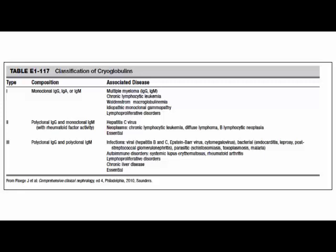Si la clona es un mastocito, definitivamente vamos a tener mieloma o macroglobulinemia de Waldenström. La leucemia linfocítica crónica, las gamapatías monoclonales que muchas veces no llegan a definir un mieloma múltiple, los desórdenes linfoproliferativos mal definidos se pueden asociar a estas crioglobulinas monoclonales. La hepatitis C marca muchísimo crioglobulinas y se asocia mucho a estos cuadros. También existen las esenciales cuando no podemos definir el cuadro de fondo.